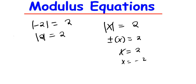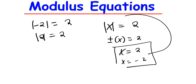Both these values, if I take them back to the Modulus, will still give me positive 2. Because the Modulus of 2 is 2, and the Modulus of negative 2 is positive 2. So that's the basic idea behind Modulus.